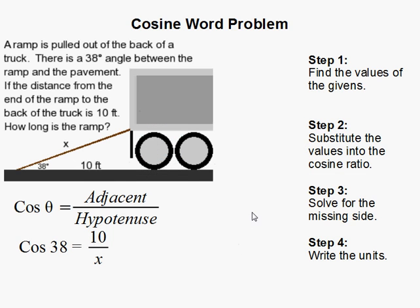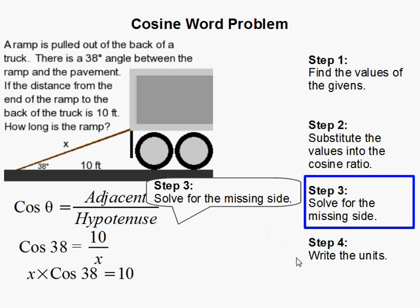All right, now it simply becomes a basic algebra problem we need to solve. So if you multiply both sides by x, that gets rid of the x here, and it puts it on the left side.